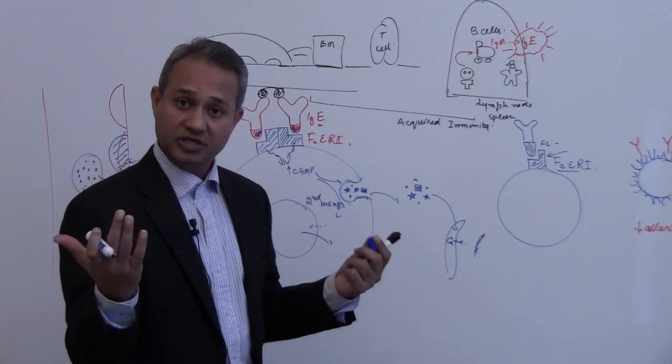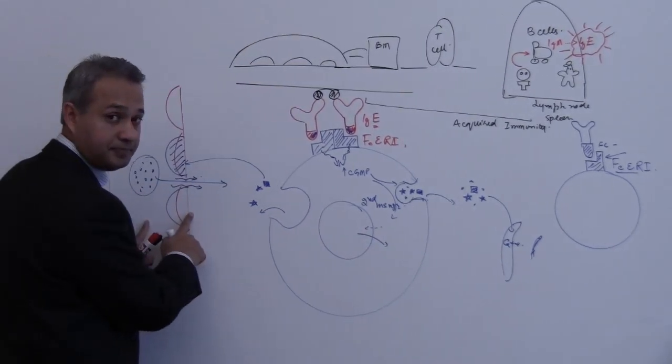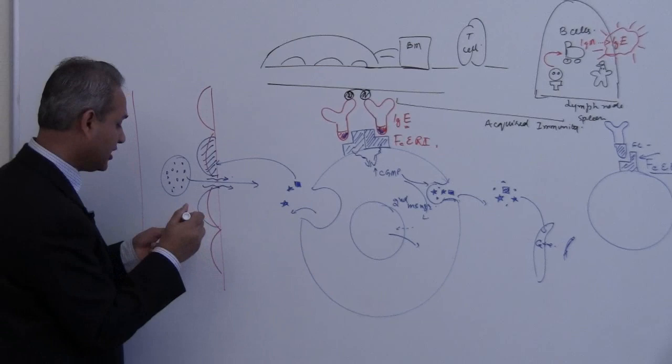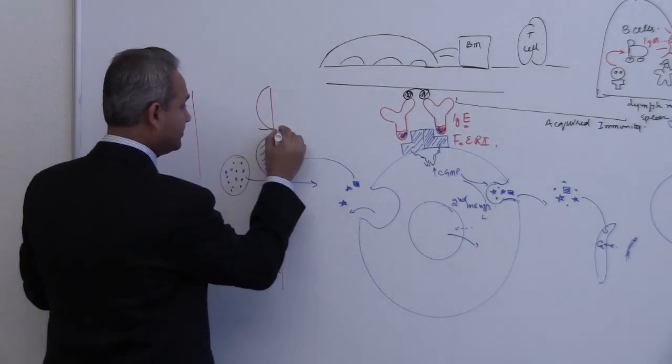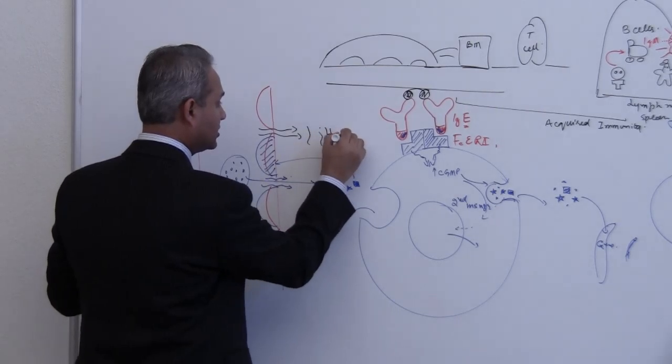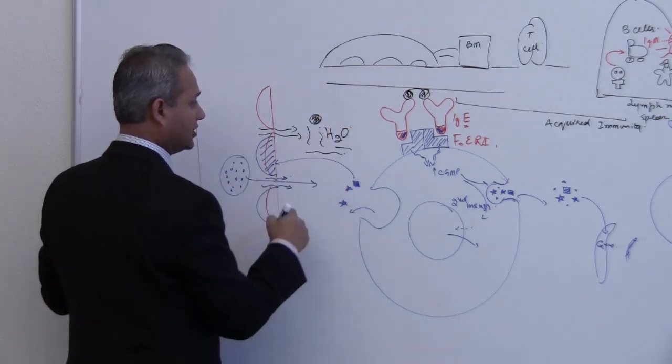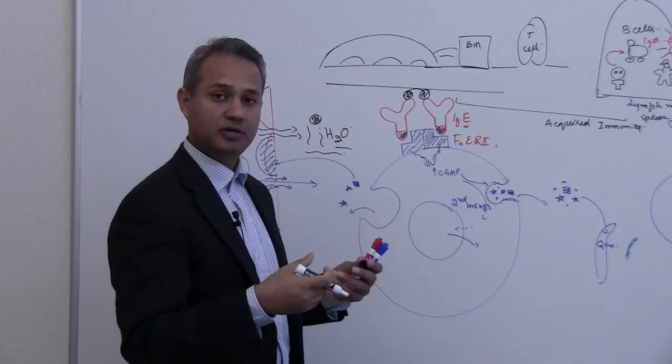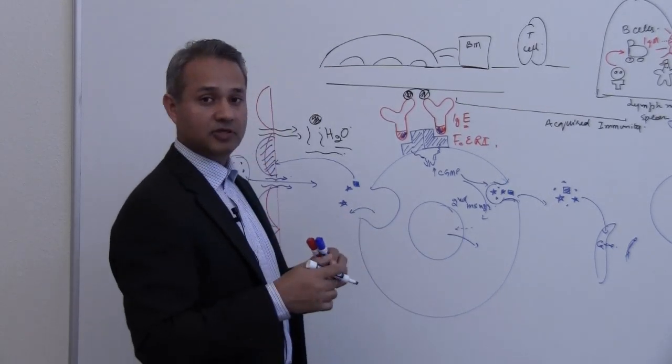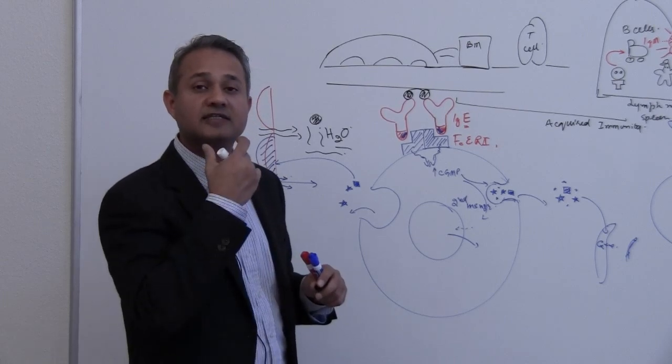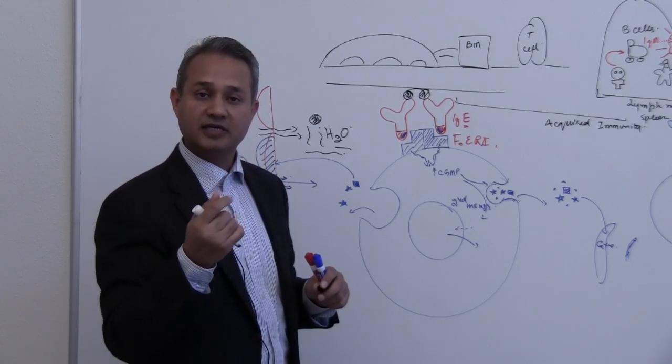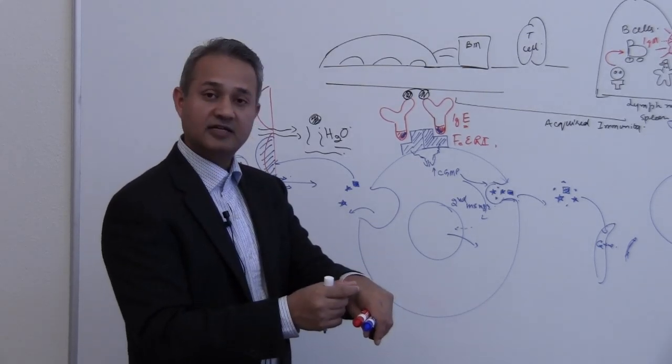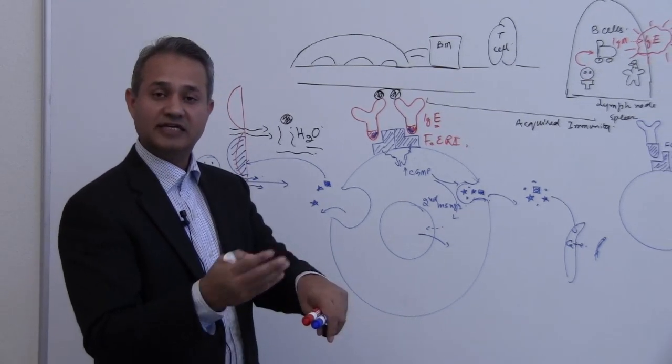When vascular dilation and increased permeability occur, there would be a lot of fluid coming in. H2O is going to come in, proteins are going to float in, and edema is going to appear. This part of the tissue is going to start swelling up. What would happen if it is the larynx? The larynx is going to swell up, which is going to choke the larynx and breathing is going to become difficult. If it is skin, small vesicles are going to start appearing which are filled with fluids - urticaria, hives, itching.